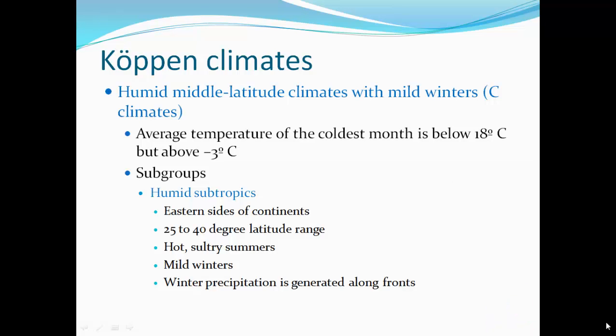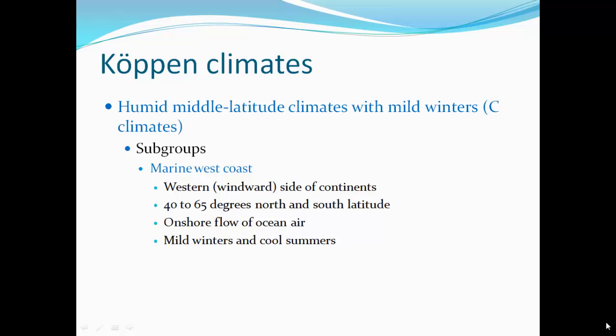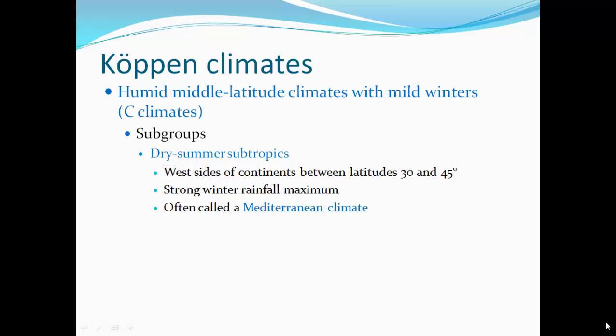Humid mid-latitude climates with mild winters — C climates — extend from just north of us all the way to Washington D.C. The average temperature of the coldest month is below 18 degrees Celsius but above minus 3 degrees Celsius. Subgroups: the humid subtropics on the eastern side of continents, 25 to 40 degree latitude range, with hot sultry summers and mild winters. The marine west coast is on the windward side of continents, 40 to 65 degrees north and south latitude, like Oregon, Washington, England, Scotland, and Ireland — with mild winters and cool summers. Mediterranean climates are on the west side of continents between 30 and 45 degrees latitude, with dry summers and strong winter rainfall — think Southern California or Italy.